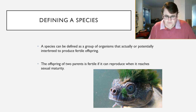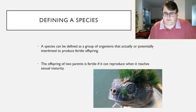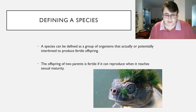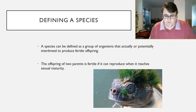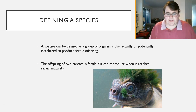For example, if two humans have children, that child can potentially have more children — it can reproduce. Whereas if a horse and a donkey reproduce, you get a mule. That mule is physically incapable of reproducing when it reaches sexual maturity. Therefore, we know that the horse and donkey must be two different species. A species must be able to produce offspring that can produce further offspring — that's how we define a species.